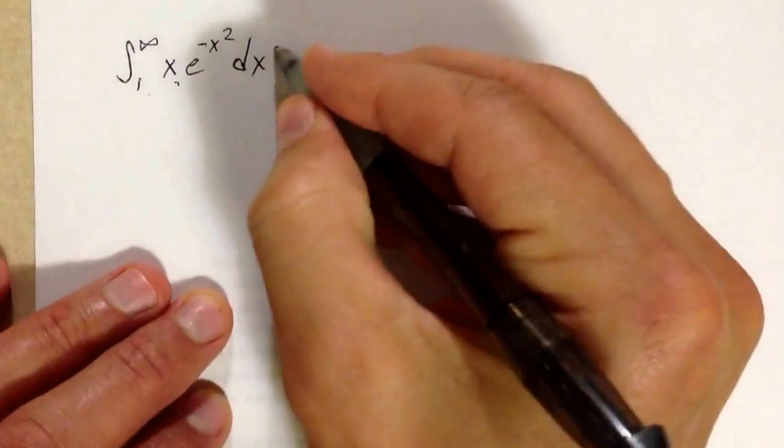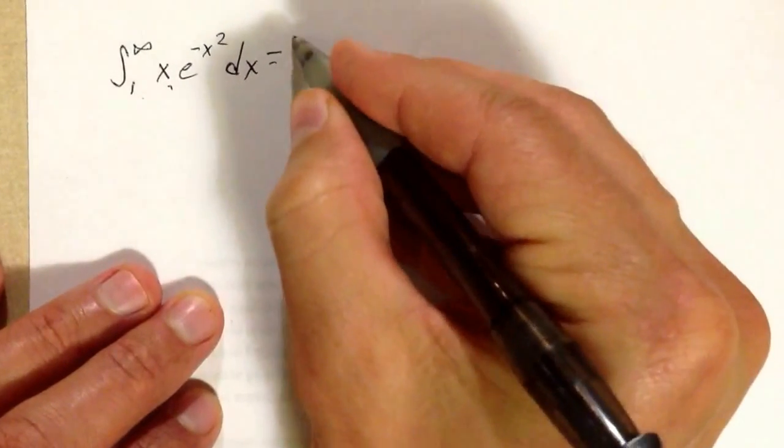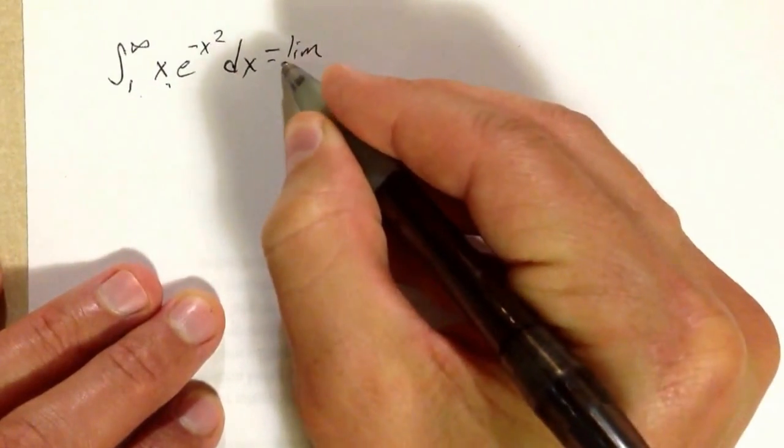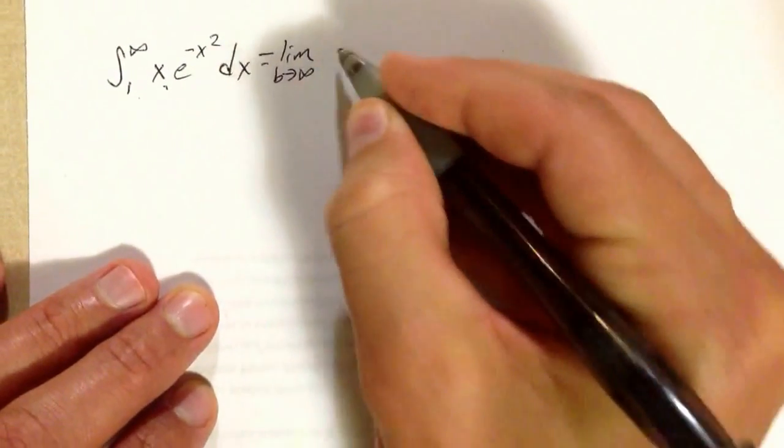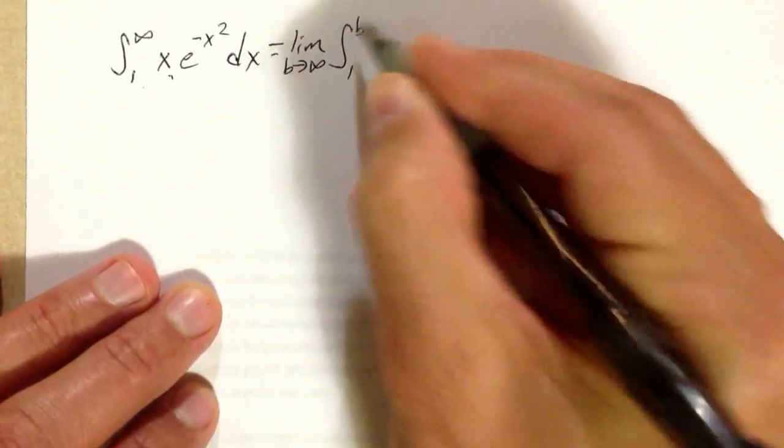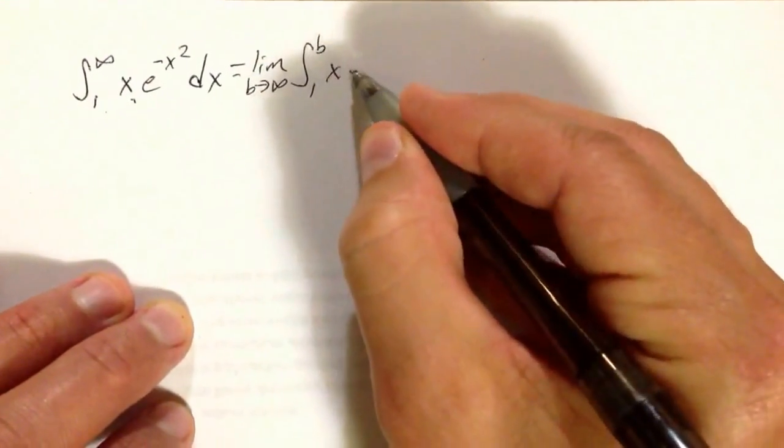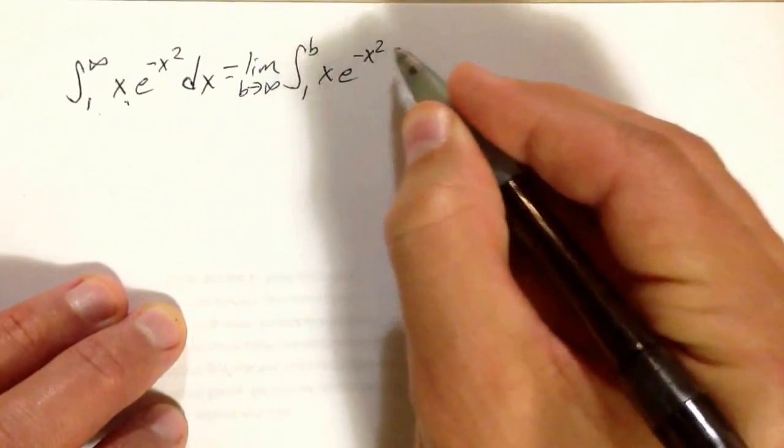First thing I'm going to do is think about that as being the limit as b goes to infinity of the integral from 1 to b: x e^(-x²) dx.